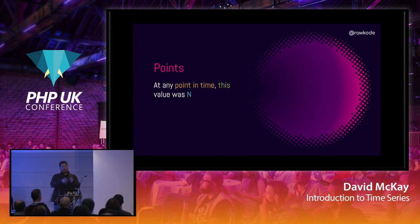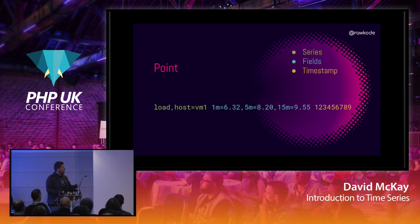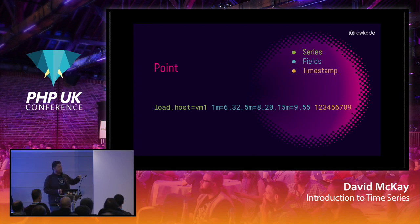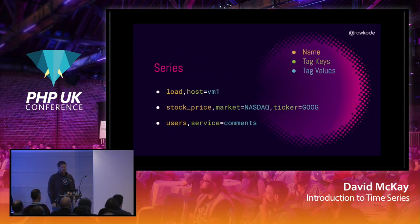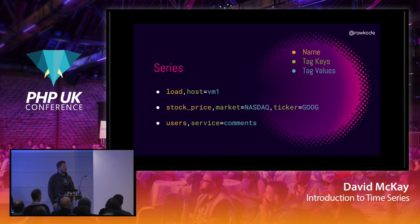When we talk about time series data we talk about points — at some point in time this value equaled this. Using a Linux load average example: the series key is made up of a measurement name ('load'), some tag values (the host, e.g., 'vm1'), the fields — the one-minute, five-minute, and fifteen-minute load averages — and a timestamp. You can use this format for anything: stock tickers, with the market and ticker as tags, or microservices tracking users, which service they're hitting, and API calls.